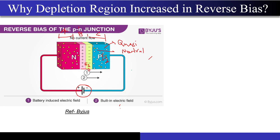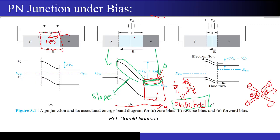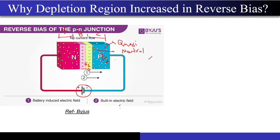So to answer why the depletion region increases during reverse bias: since E2 (the field in quasi-neutral regions) is essentially zero, assume E2 equals zero. Now think about why the depletion region must increase in reverse bias given this constraint.